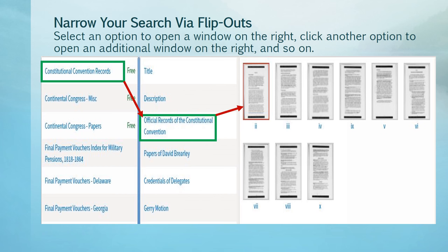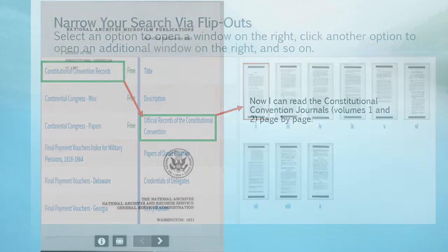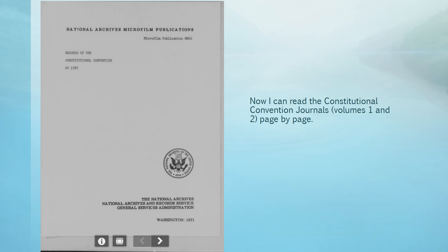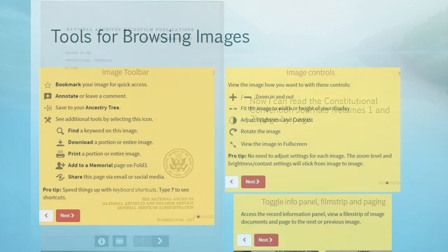If I choose official records of the Constitutional Convention, I get a listing of some of the pages from that record. Now I can read the Constitutional Convention journals, volumes 1 and 2, page by page, if I really want to.